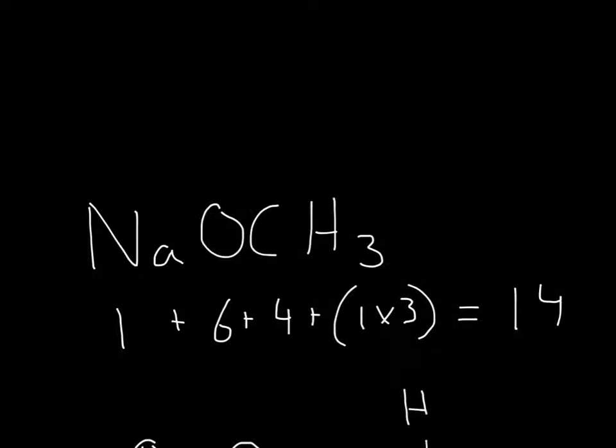So for NaOCH3, all I did was write the valence electrons: 1, and then oxygen will be 6, carbon's 4, hydrogen's 1, but there's 3 of them, so 1 times 3. All of that will equal 14.